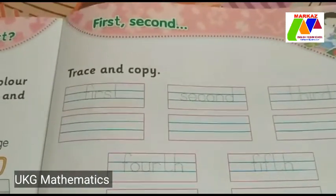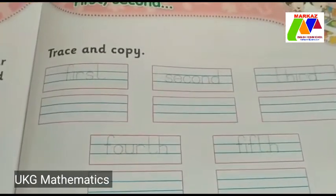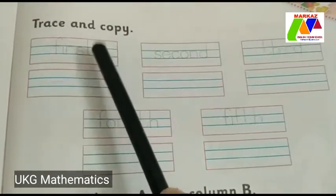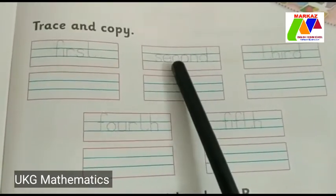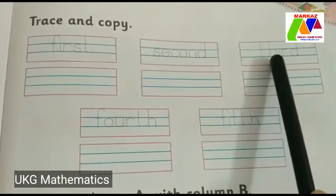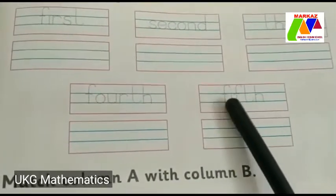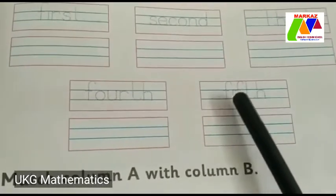In the next page, page 111 — first and second — trace and write. First: F-I-R-S-T. Children, trace here and write here. Second: S-E-C-O-N-D. Next, third: T-H-I-R-D. Next, fourth: F-O-U-R-T-H. Next, fifth: F-I-F-T-H.